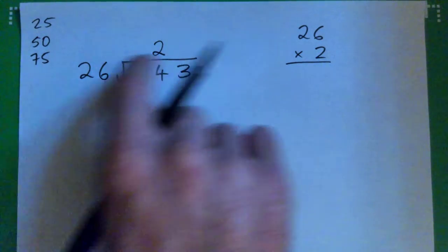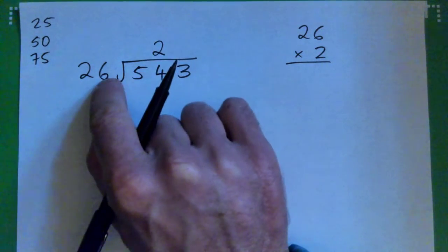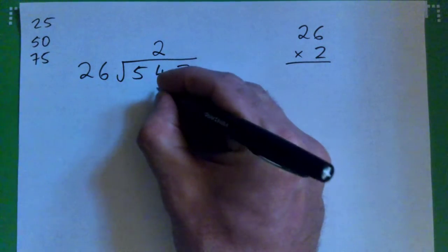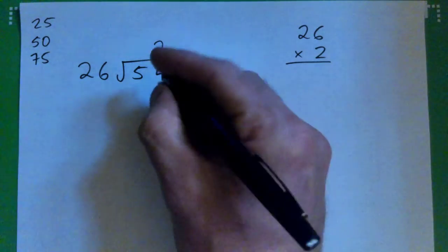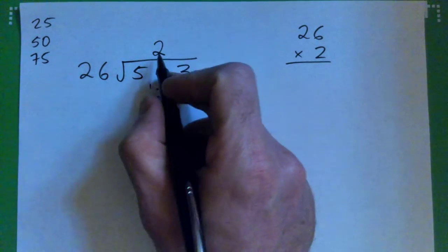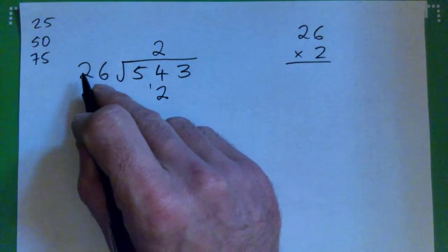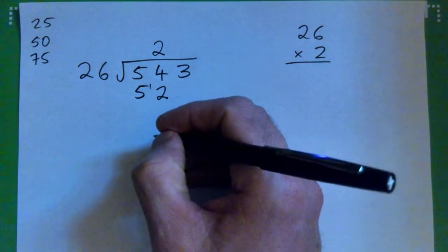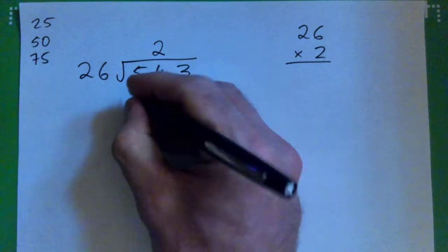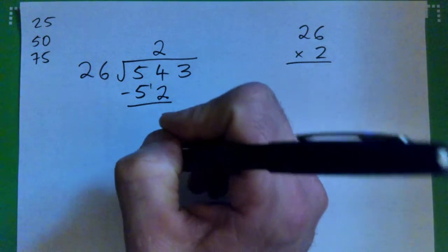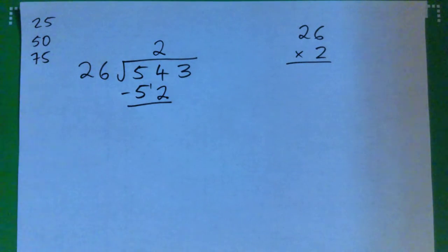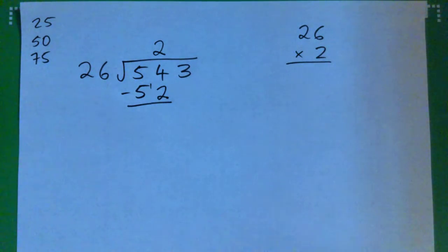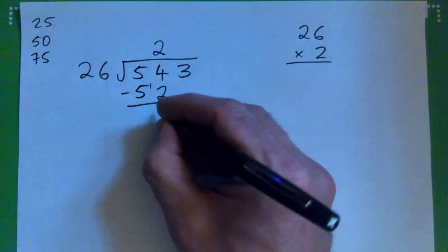I'm going to do it over here. 2 times 6 is 12, remainder 1. 2 times 2 is 4 and 1 is 5. Make sense? Good. And then we subtract — 54 minus 52 leaves 2.